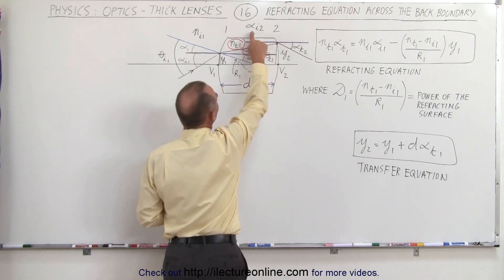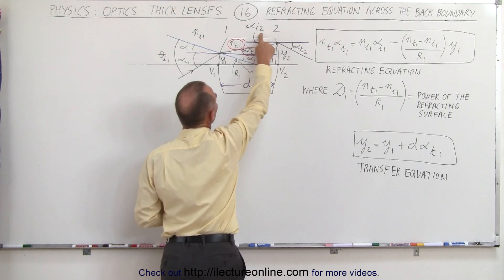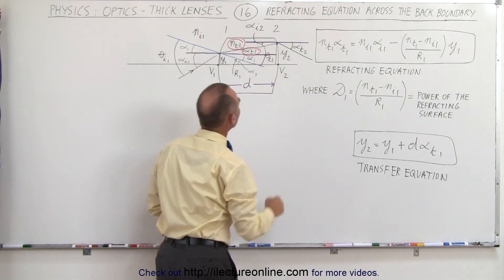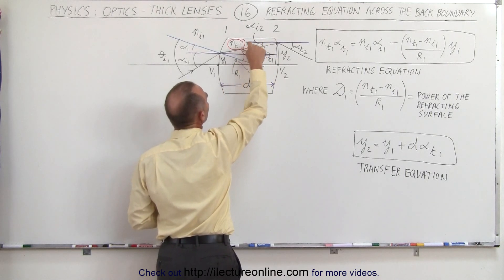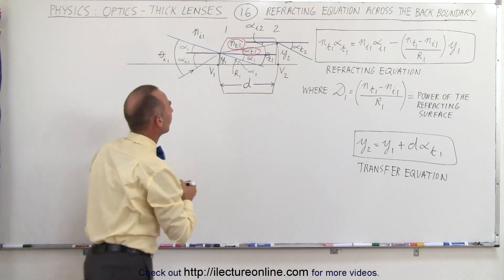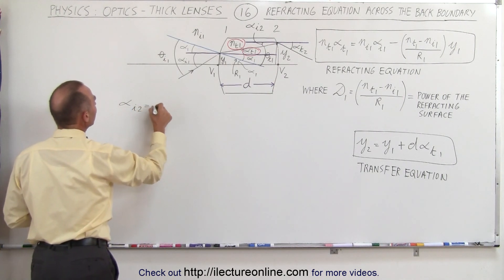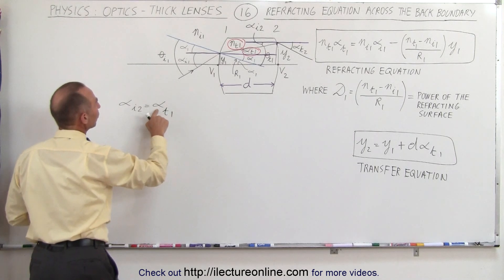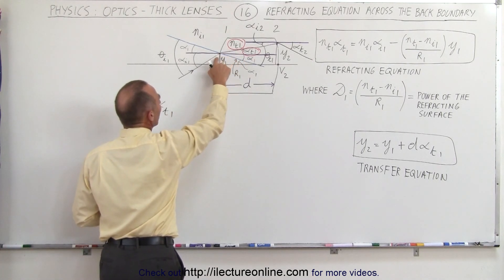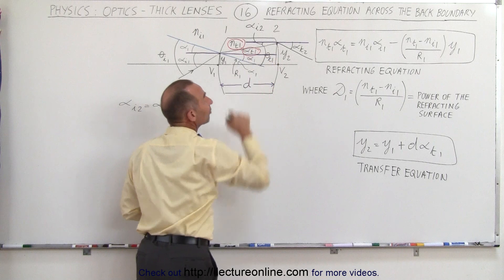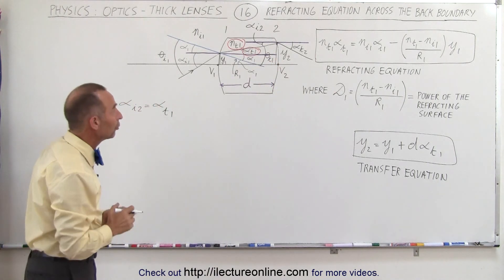Now if we look carefully, alpha I2 is actually equal to alpha T1 because those are alternate interior angles. So alpha I2 equals alpha T1. The transmitted angle of the first boundary equals the incident angle of the second boundary, and that's important to note.